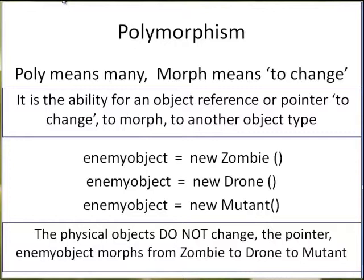A variable is required to access an object. It is the variable that morphs. Let's say I have a variable named enemy object. It is declared as type enemy, the parent class. I can assign to that variable a new zombie object. On the next line, I create a second different object of type drone and assign it to the same variable enemy object. That is the morph. The variable enemy object, which was accessing a zombie, now has changed into a variable accessing a drone object.